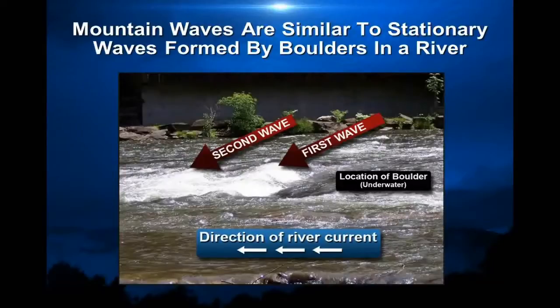You can think of mountain waves as being similar to the waves that you see in a river as it's flowing. In this image, the river current is going from right to left and there's a boulder that's under the water, and as the water flows over that boulder, it creates two waves downstream of the boulder.